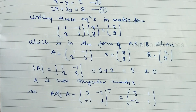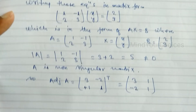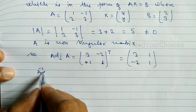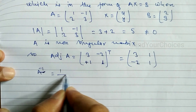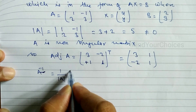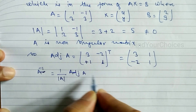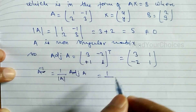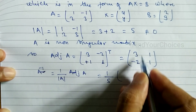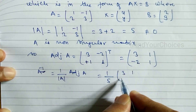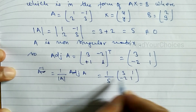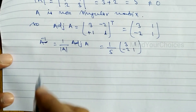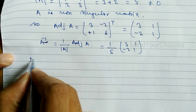Now we find A inverse using the formula: A inverse equals one over determinant of A, multiplied by adjoint A. Since the determinant is five, we have A inverse equals one-fifth times [3, 1; -2, 1]. We will multiply the matrix first before applying the fraction one-fifth.